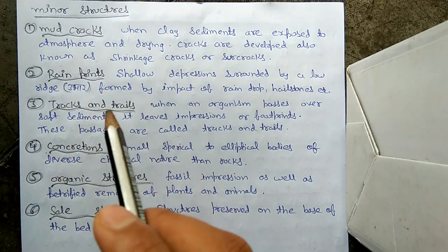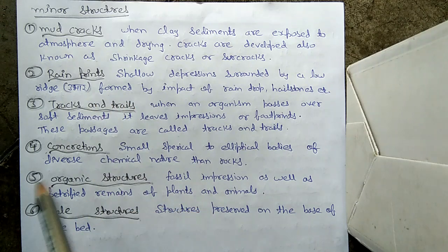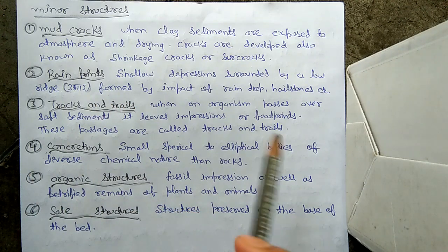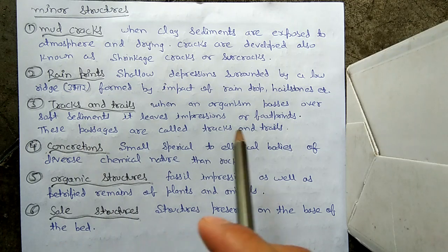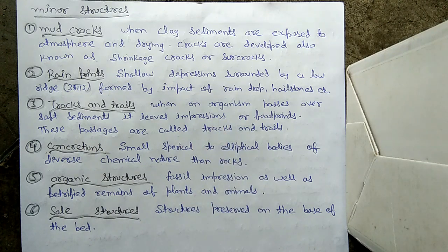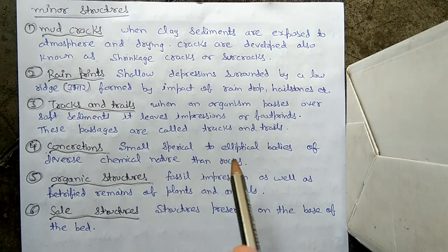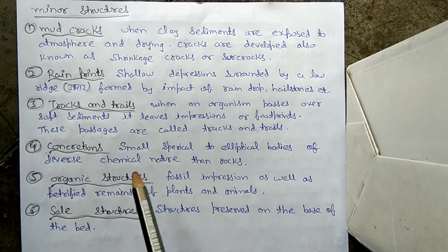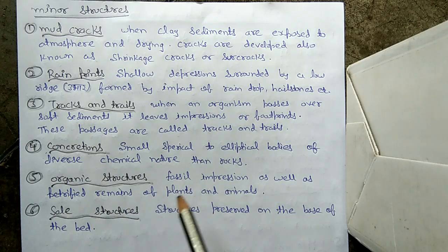The third minor structure is tracks and trails: the passages through which organisms passed in ancient times. When an organism passes over soft sediment it leaves impressions or footprints, and that path is called tracks and trails. The fourth is concretions: small spherical to elliptical bodies of diverse chemical nature, having a different chemical composition compared to the surrounding rocks.